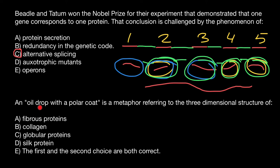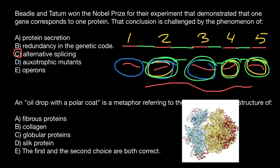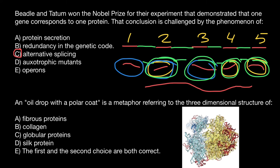And second question, an oil drop with a polar coat is a metaphor referring to the three-dimensional structure of, and you have to choose one of these proteins. Take a look at this picture. What kind of protein you see here?